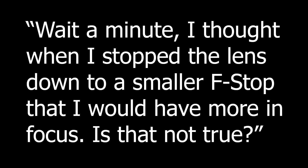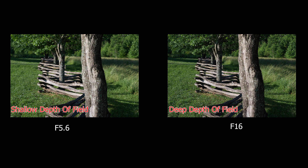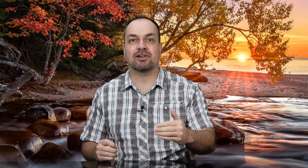Question 1: I thought when I stopped the lens down to a smaller f-stop I would have more in focus — is that not true? This is probably the most common point of confusion. People tend to get depth of field and sharpness all mixed up. As you stop a lens down, you do indeed get a larger zone of focus — more depth of field. However, as the zone of focus increases, the actual sharpness of the overall image will go down as you get into smaller and smaller f-stops due to diffraction.